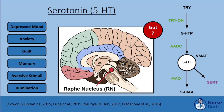The first monoamine we will discuss is serotonin, synthesized in the Raphe nucleus located in the midbrain. In the synthetic pathway, tryptophan (TRY) is converted into 5-hydroxytryptophan (5-HTP) via tryptophan hydroxylase (TRY-OH). 5-HTP is then converted into 5-hydroxytryptamine (5-HT), or serotonin, under the influence of L-amino acid decarboxylase (AADC). Serotonin is then moved into the vesicular monoamine transporter (VMAT) for transport to the synapse.